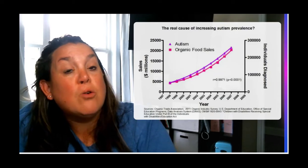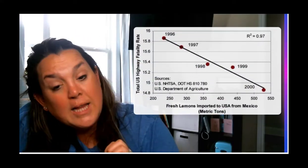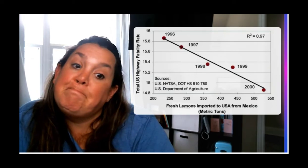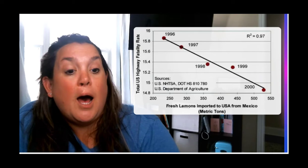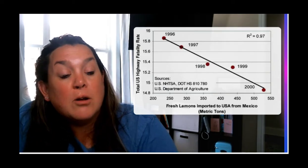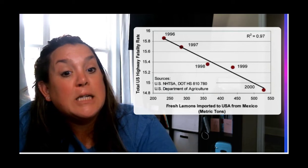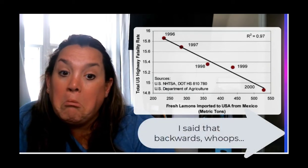Another one: lemon imports and highway fatality rates. Do you think that having less fresh lemons imported from Mexico is decreasing the fatality rate? They are very highly correlated. You can see at the top it has an R squared of 0.97.